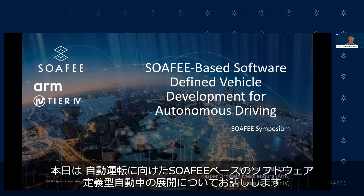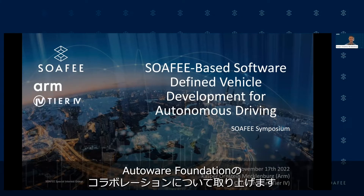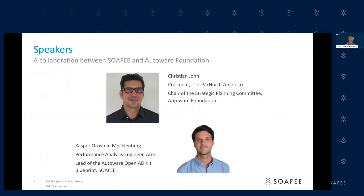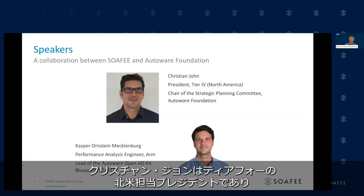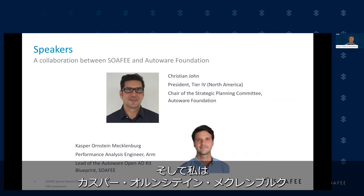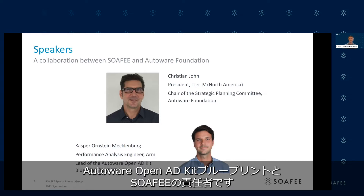Welcome everybody to this talk on SOFI-based software-defined vehicle deployment for autonomous driving. The work done in this presentation is mainly a collaboration between SOFI and the Autoware Foundation. Let me start by presenting Christian and myself. Christian John is the president at Tier 4 for North America and also the chair of the strategic planning committee at the Autoware Foundation. My name is Caspar Orenstein-Mecklenburg from ARM, and I'm a performance analysis engineer, and I lead the Autoware OpenADKit blueprint in SOFI.